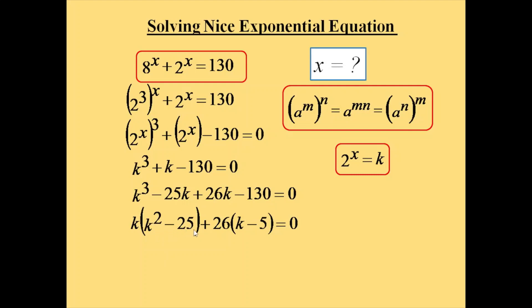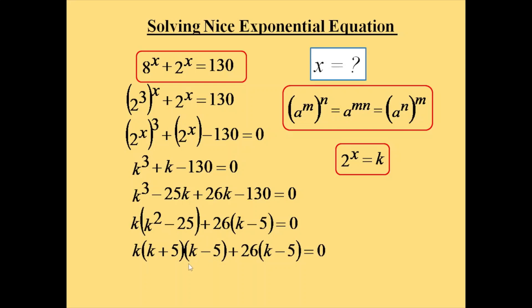We know that a² - b² = (a + b)(a - b). Applying this, k² - 25 = k² - 5² = (k + 5)(k - 5). So the equation becomes k(k + 5)(k - 5) + 26(k - 5) = 0. Here k - 5 is common in both parts, so taking it out: (k - 5)[k(k + 5) + 26] = 0.